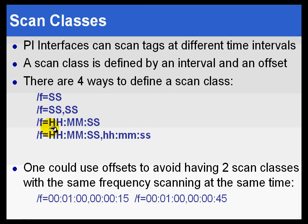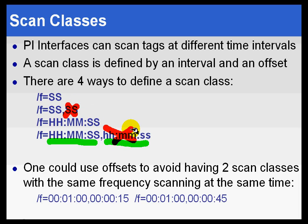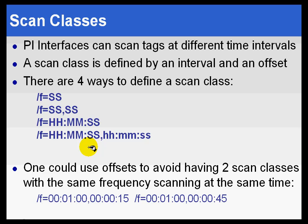That same functionality is available in an alternate hour-minute-second format, with an optional offset in hour-minute-second as well. In both formats, the offset is optional — you can simply use the frequency. If you don't specify an offset, scanning will occur at the given frequency offset from the time you started up the interface. So if you specified 60-second scanning and started the interface at 12 seconds after the minute, it will scan at 12 seconds after the minute for as long as the interface is running.